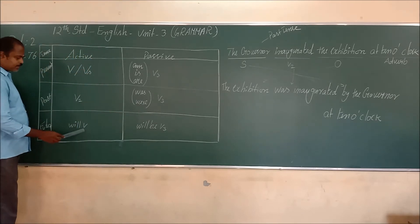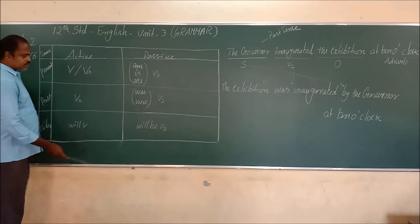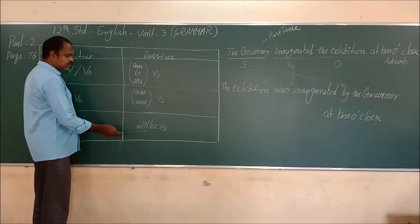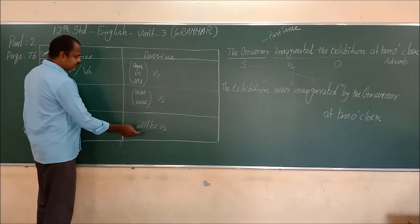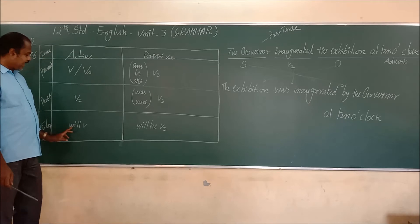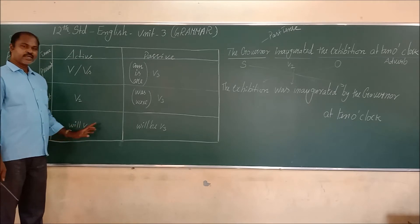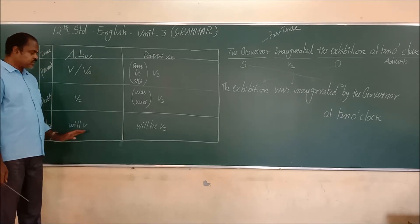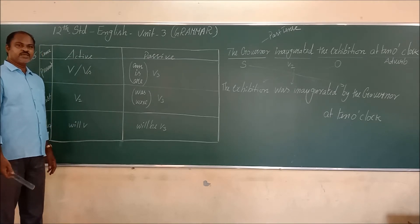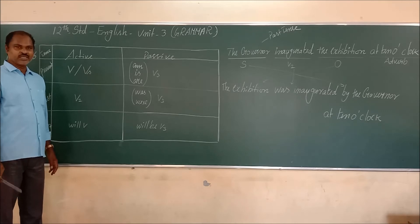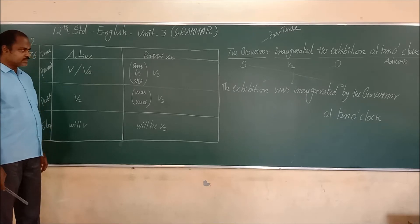For future tense: 'will + V1' becomes 'will be + V3' in passive. Similarly, 'can + V1' becomes 'can be + V3', 'must + V1' becomes 'must be + V3', and 'should + V1' becomes 'should be + V3', like this.